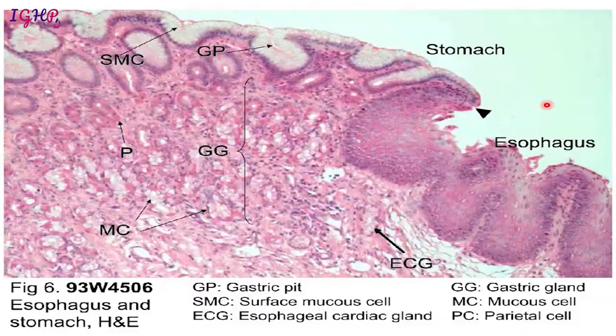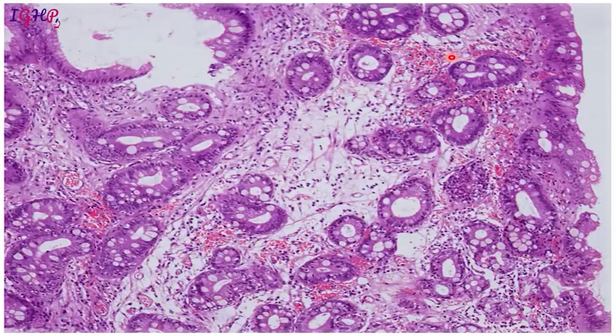Histologically, the squamocolumnar junction is the area where the squamous epithelium of the esophagus meets the columnar epithelium of the stomach. What is classical for Barrett's is the presence of goblet cells — these whitish holes on histology. If you see goblet cells, the findings are relatively specific and indicate that intestinal metaplasia has occurred.